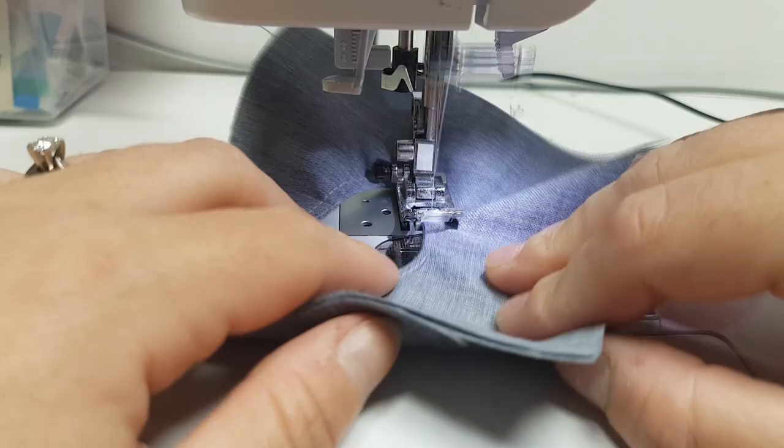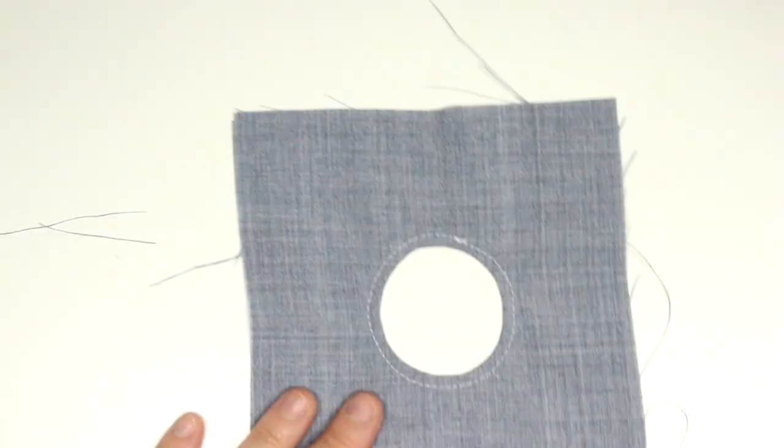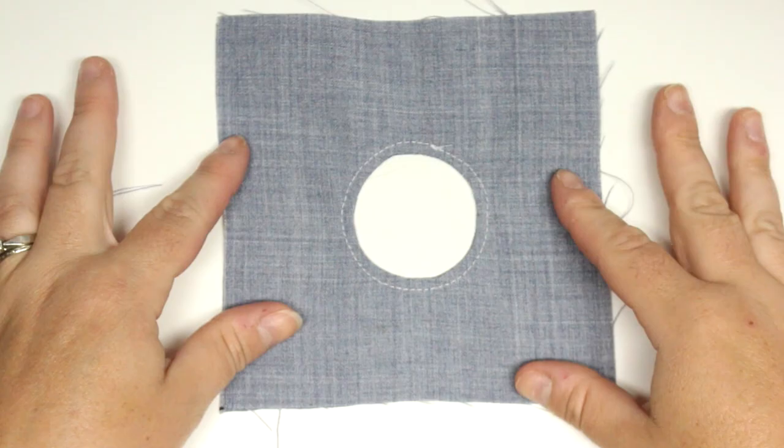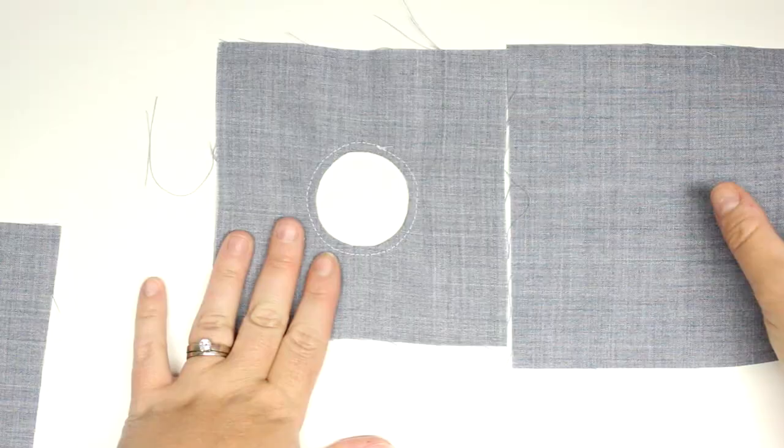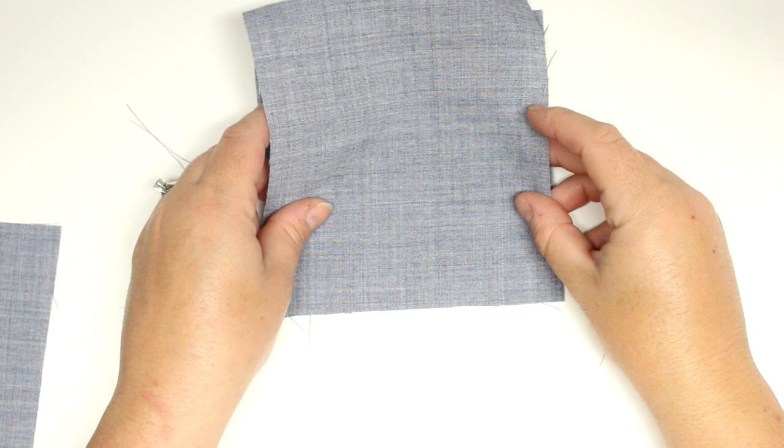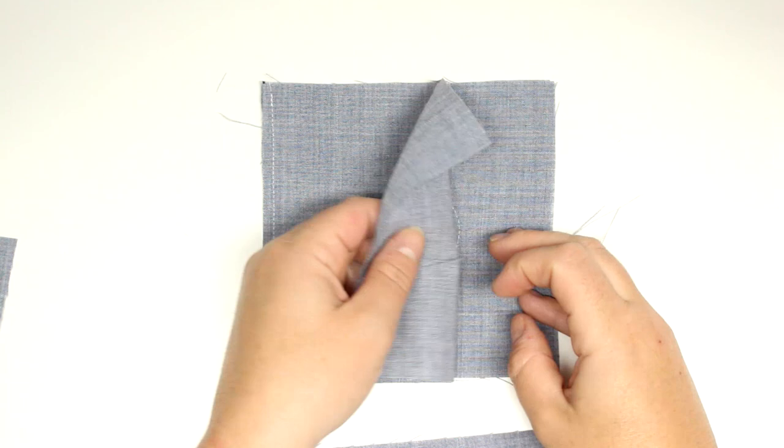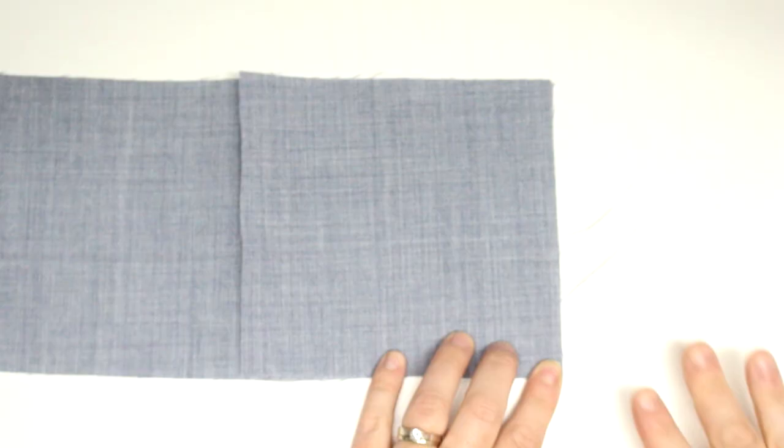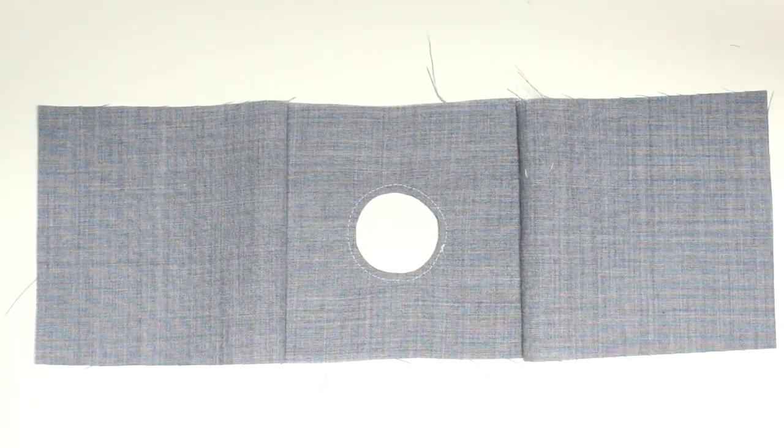So now we're finished with the top of your Kleenex box cover, and now we will start attaching the side panels. I'm not going to be hiding any raw edges in this project just because you're not going to see them and I don't really find that that's necessary. If you are planning on selling them, you can definitely serge the edges, zigzag the edges, or use bias tape on all the edges. But for me, I'm low maintenance, so I don't really care. I'm just going to let my raw edges fly.